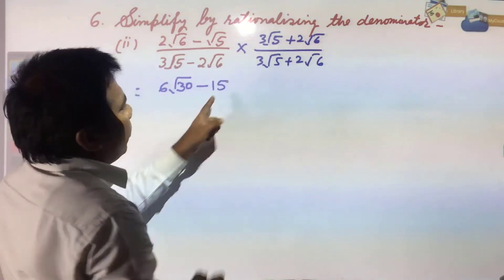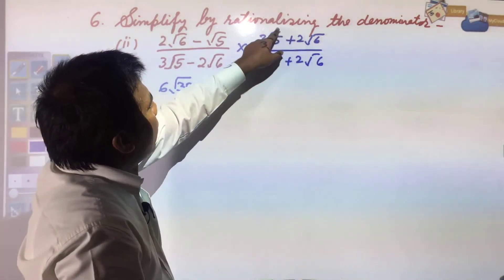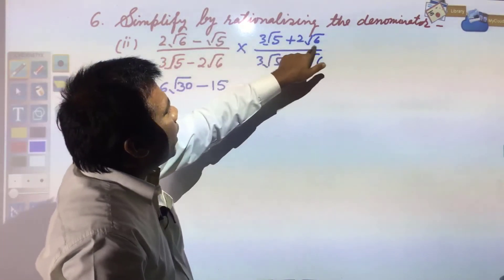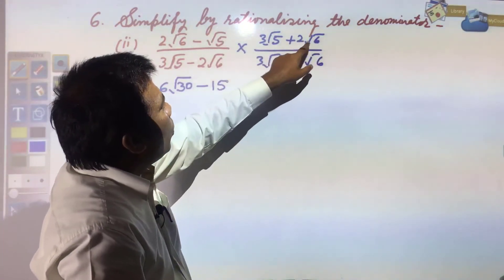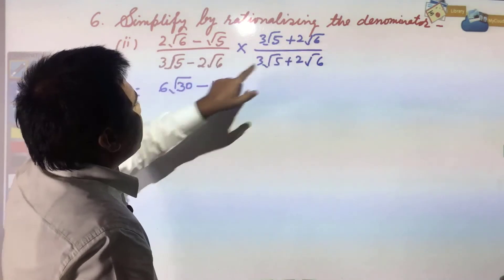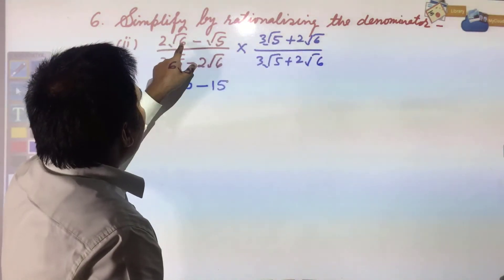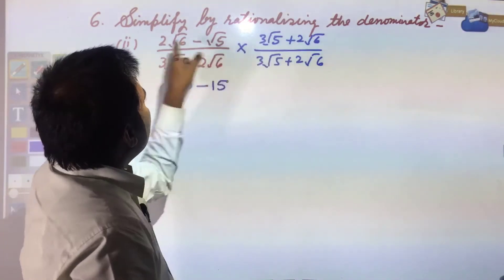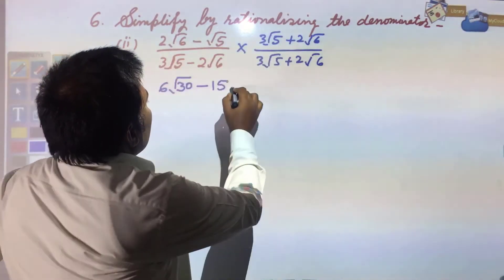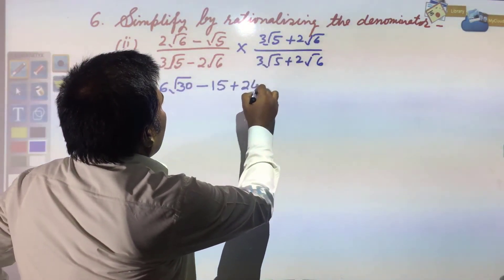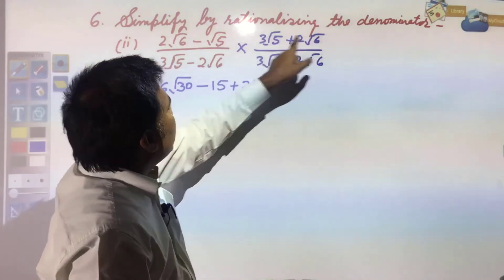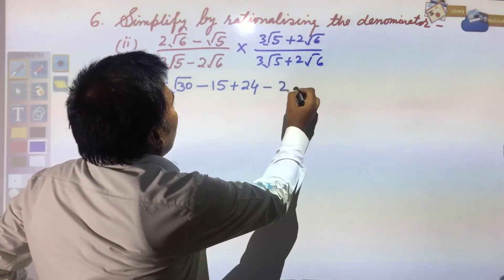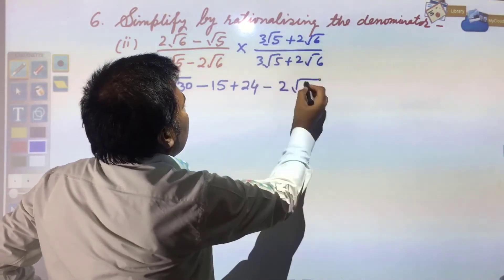Then 2√6 × 2√6 = 4 × 6 = 24. And 2√6 × √5 gives -2√30. In the denominator you have (a - b)(a + b) = a² - b², so it becomes (3√5)² - (2√6)² = 9 × 5 - 4 × 6 = 45 - 24 = 21.